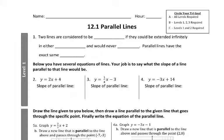Let's look at question one. Two lines are said to be parallel if they could be extended infinitely in either direction and would never cross. You could write the word cross if you want to. I think in class I use the word intersect.